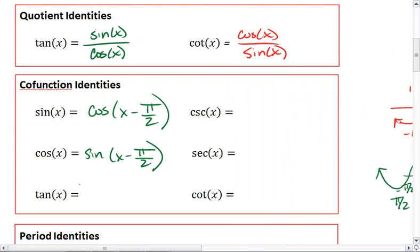Tangent is equal to cotangent times pi over 2 minus x. And we see the same thing happens with cotangent. Cotangent is tangent of pi over 2 minus x.